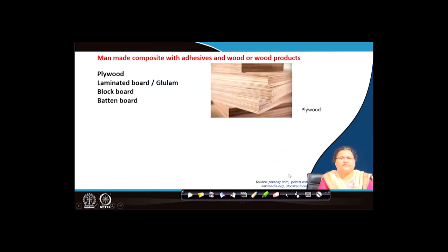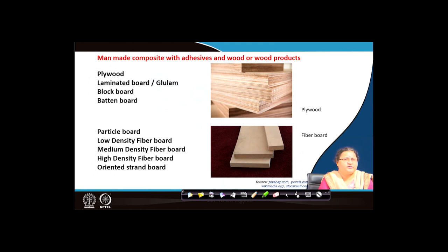The first type we will discuss is plywood, which is not a byproduct but a converted wood. Others include laminated board, block board, and batten board, which are made from the remnants of the wood industry. We also have particle board, also called low density fiber board, oriented strand board which is a kind of particle board, medium density fiber board, and high density fiber board. You may have seen these applications in furniture.